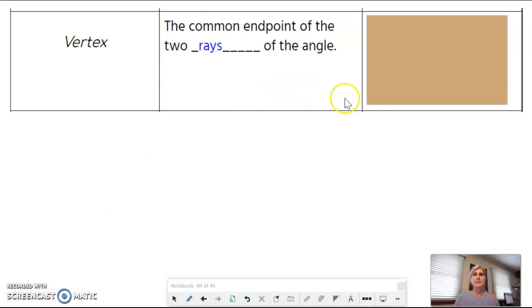A vertex is the common endpoint of the two rays of an angle. So here in the picture you are going to highlight this point and vertices, a vertex, are indicated with a point, just a dot, and we use capital letters. So my example is P. The vertex is point P and I could call this angle P because we often identify our angles by their vertex.